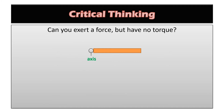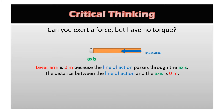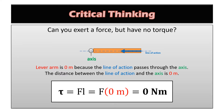Critical thinking: can you exert a force on an object but have no torque? What if the force was acting so that the line of action passes through the axis? The distance between the line of action and the axis is zero meters, so the lever arm is zero. Therefore, the torque equals zero newton meters because there's no distance between the line of action and the axis.